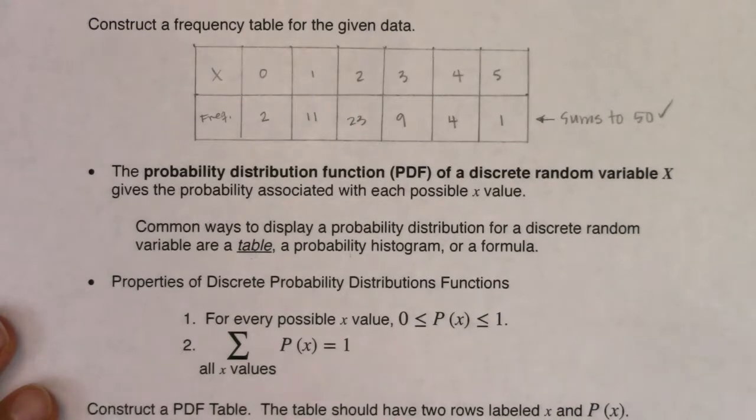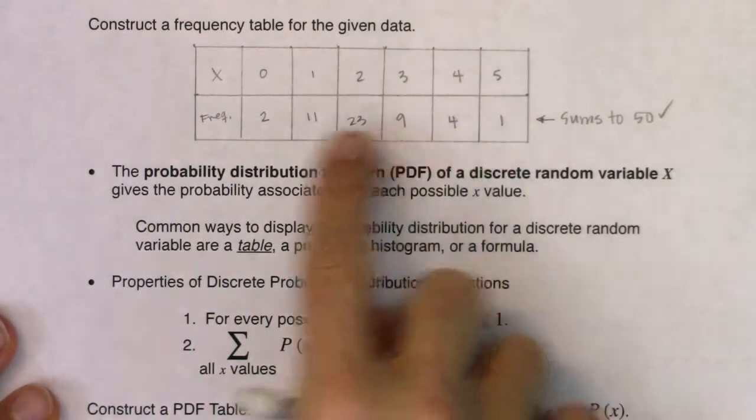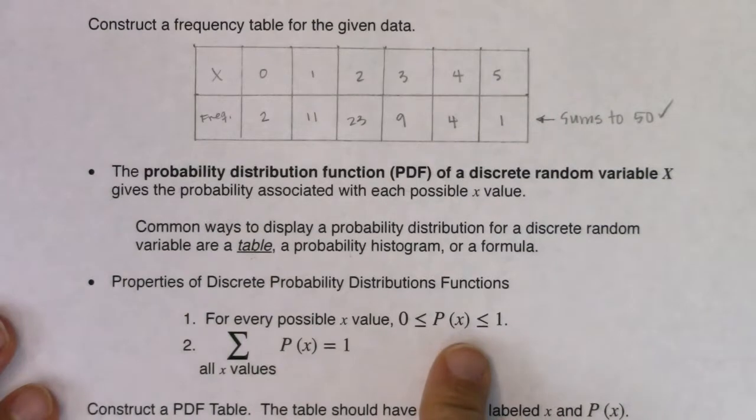When it comes to tables, there are two main rules. In order to be a legitimate table, you have to pass through these two properties. Every probability has to be a number between zero and one. That was true in Chapter 3, and it's true for the rest of the semester. Every number on that bottom row is going to have to be a number between zero and one. And then that bottom row will have to sum to one.